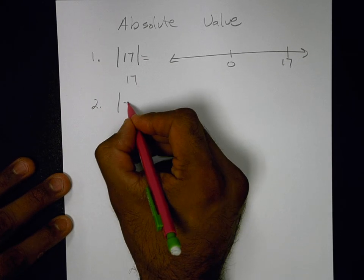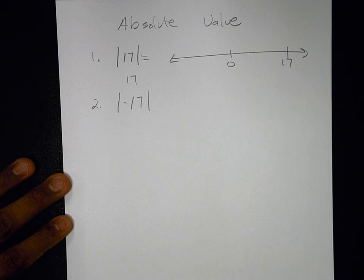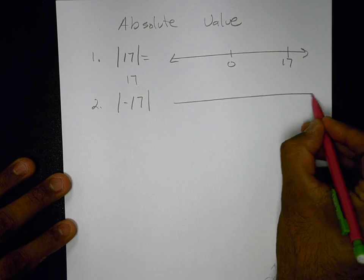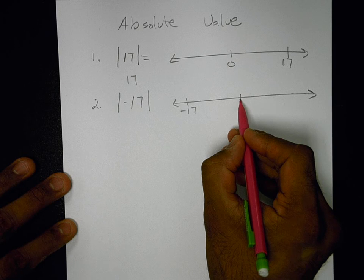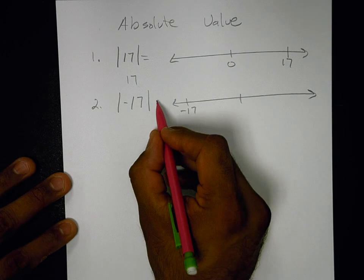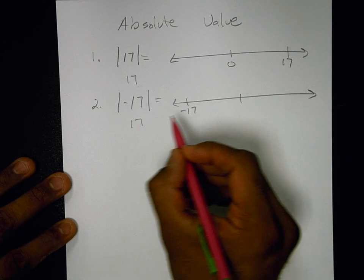Number two, if I was to ask you, what's the absolute value of negative 17? Well, if I drew that on a number line, it's 17 spaces as well as the one above it. So it's also 17.